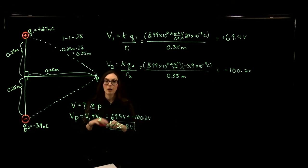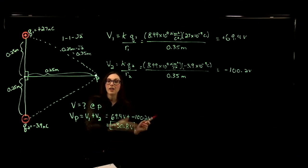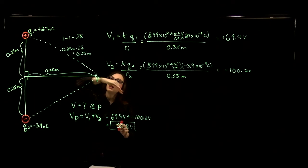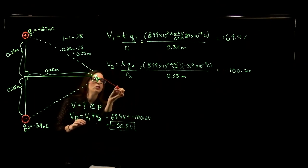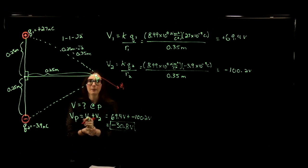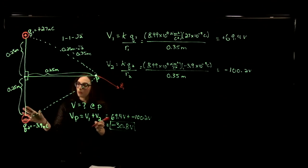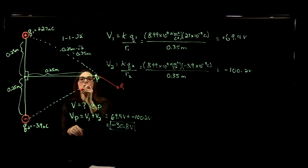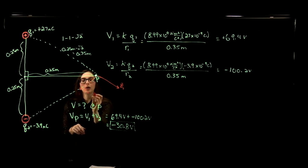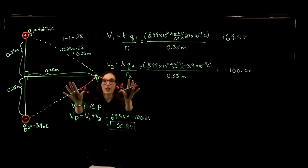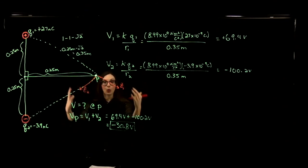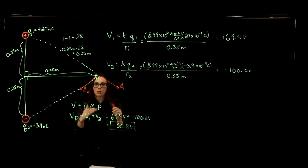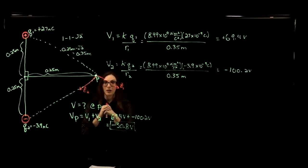Our electric field vector always points away from a positive charge. So my electric field from charge 1 at point P, since it's a positive charge, would be pointing away along that direction. The electric field from charge 2 at point P points toward the negative charge. Both of these vectors have x and y components. To find the total electric field vector at point P, you'd find the x and y components of E1 and E2, then sum them.